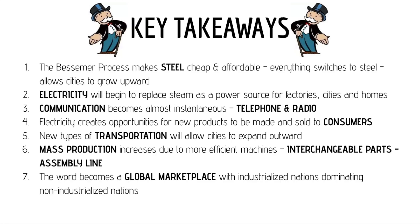Some key takeaways from this lesson: The Bessemer process makes steel cheaper and more affordable, and everything switches to steel, allowing cities to grow not only outward but also upward — the beginning of skyscrapers. Electricity begins to replace steam as a power source for factories, cities, and homes. Communication becomes almost instantaneous with the telephone and radio. Electricity creates opportunities for new consumer products. New transportation allows cities to expand outward. Mass production of goods takes place through interchangeable parts and the assembly line. And the world is becoming a global marketplace with industrialized nations dominating non-industrialized nations.